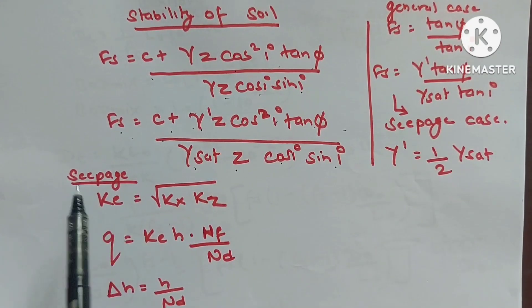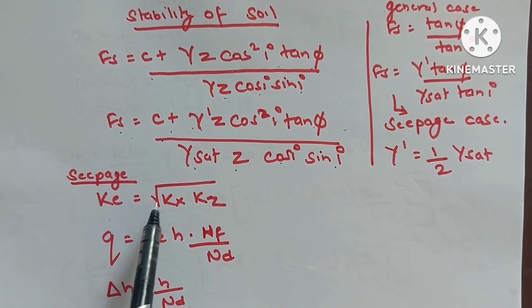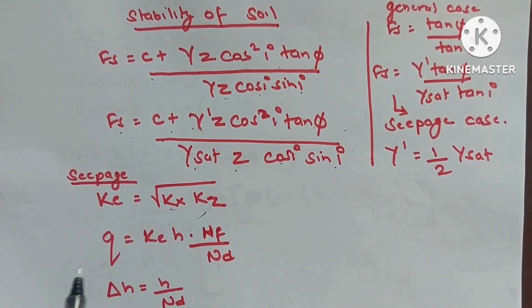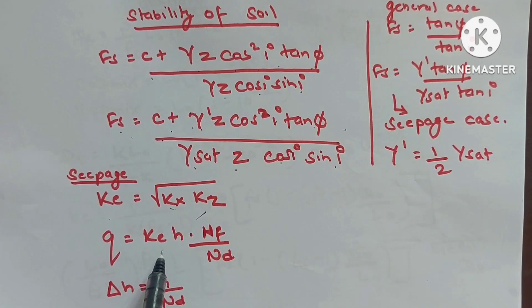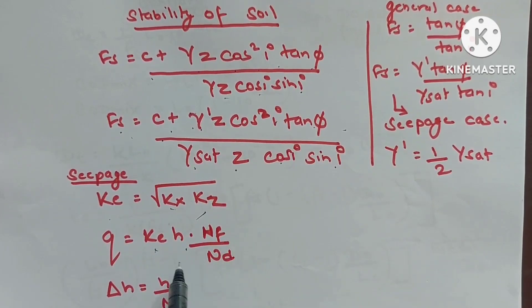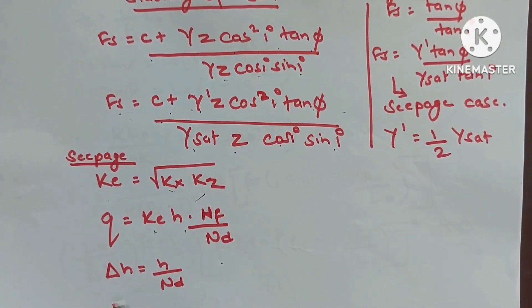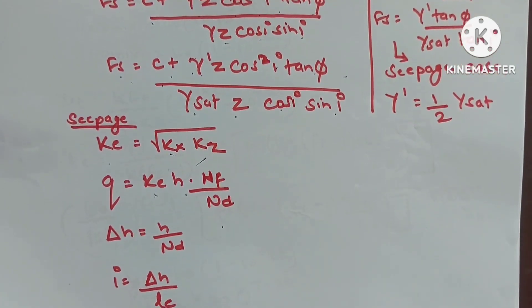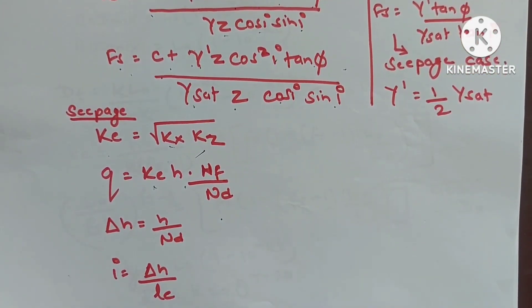Seepage (Creep theory): K = √(Kx × Kz). Q = Nf/Nd × ΔH × K, where ΔH = H/Nd (head loss per potential drop), φ is exit gradient.